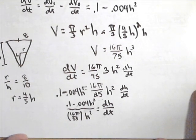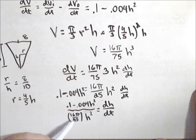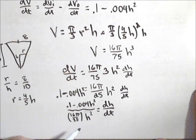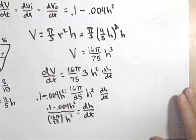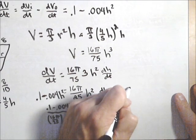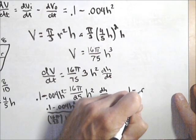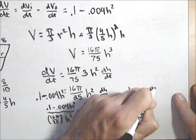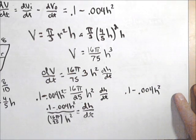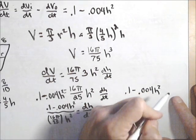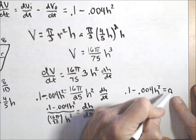Now, let's think about what we know here. This denominator is always going to be positive, so the only thing that can be positive or negative is this numerator. So we're going to analyze what's going on with 0.1 minus 0.004h². Basically, we want to know where it's positive and where it's negative. So let's see where it's zero.